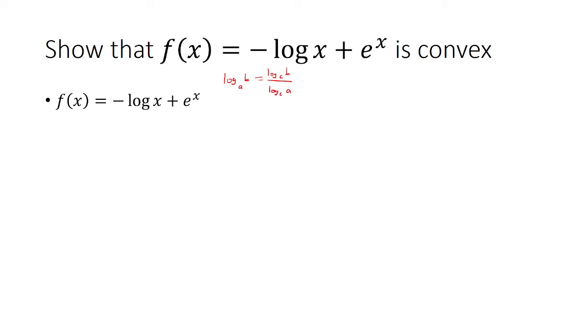Here the base is 10, so a equals 10, b equals x. We're going to write the new base as e, so this will be log base e of x over log base e of 10. Log base e of x is just natural log of x, and log base e of 10 is the natural log of 10.